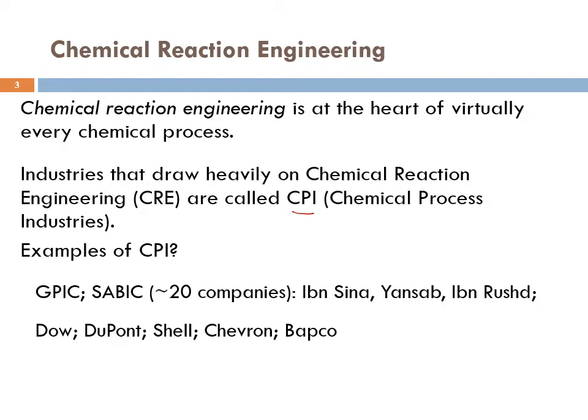We have SABIC in Saudi Arabia, which consists of 20 companies like Ibn Sina, Ibn Rushd, and so on. We have Dow, a very famous chemical process industry company. DuPont, another important company in America. Shell, Chevron, Bobco — they are all examples of CPI.